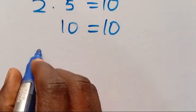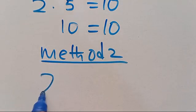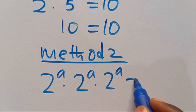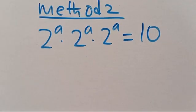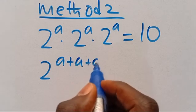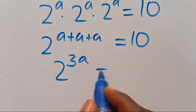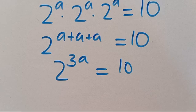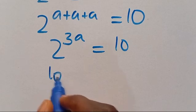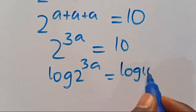Now let's see Method 2 — the easiest method. We are given 2 to the power of a, multiplied by 2 to the power of a, multiplied by 2 to the power of a, equals 10. This simplifies to 2 to the power of a plus a plus a, which equals 2 to the power of 3a, equals 10. Taking log of both sides: log of 2 to the power of 3a equals log 10.